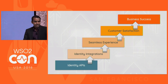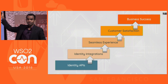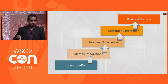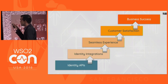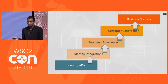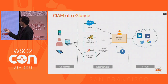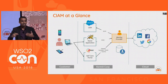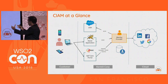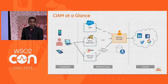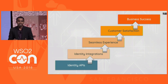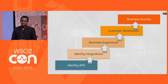This is why IAM APIs are the hottest thing. We are all concerned about business success, which depends on customer satisfaction. Customer satisfaction depends on seamless experience. Seamless experience depends on identity integrations — provisioning using SCIM, authenticating and single sign-on using OpenID Connect — all identity integrations, going across borders, not only within the company. The backbone of everything is the identity APIs.